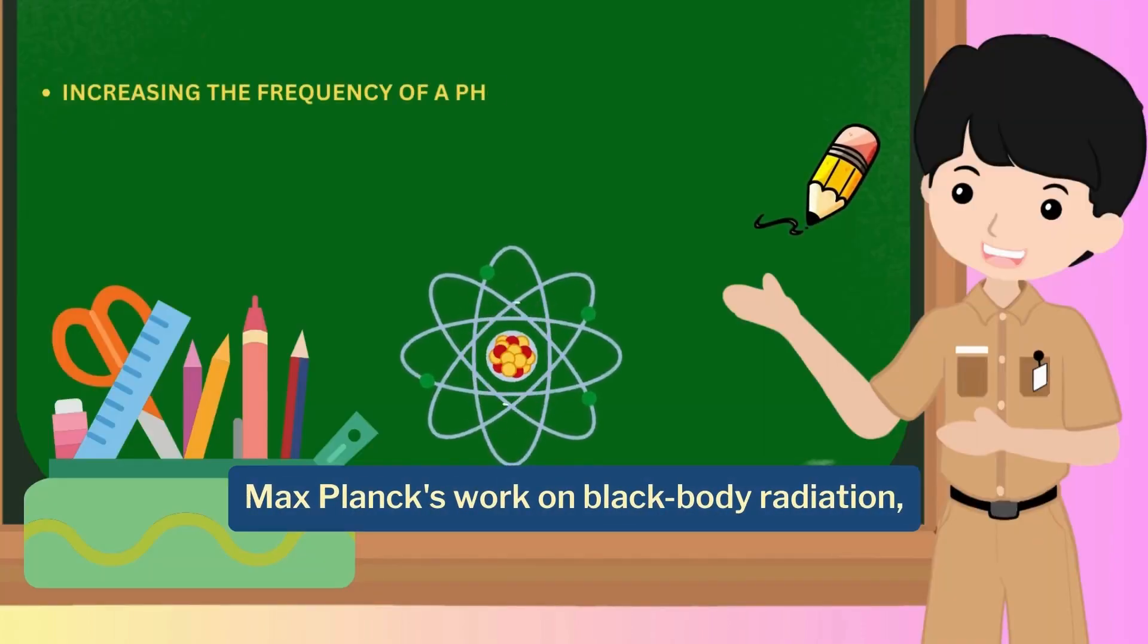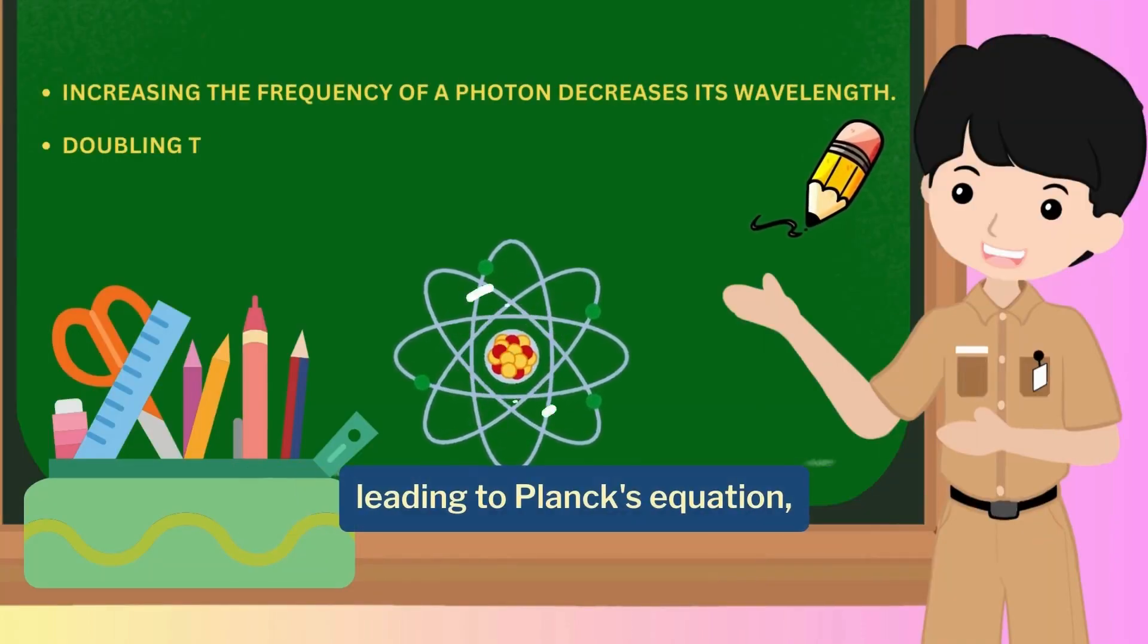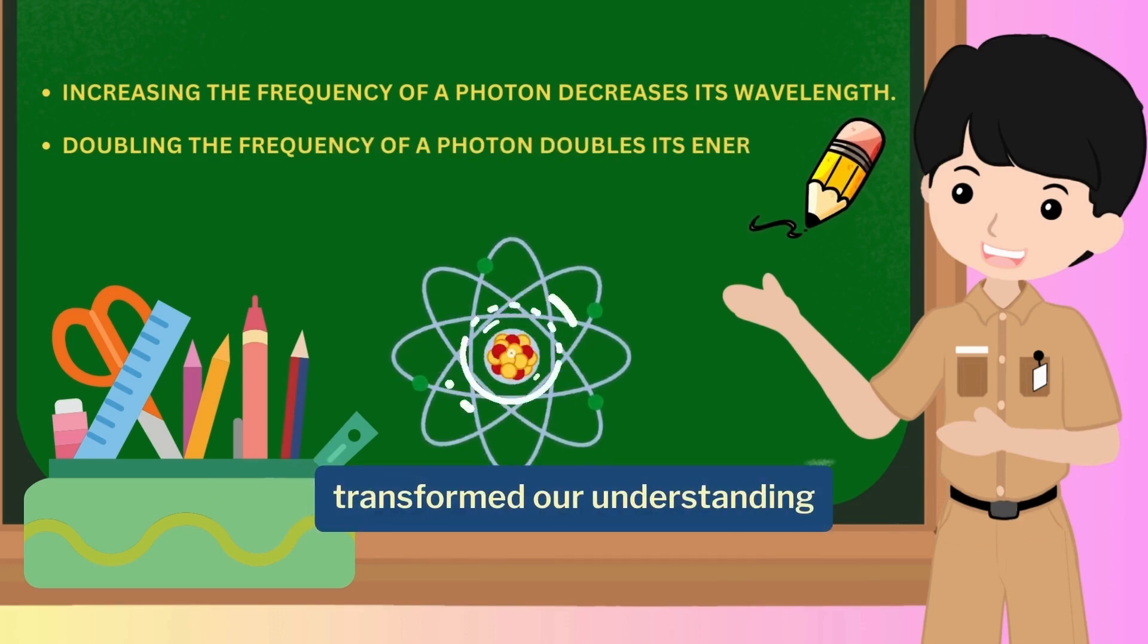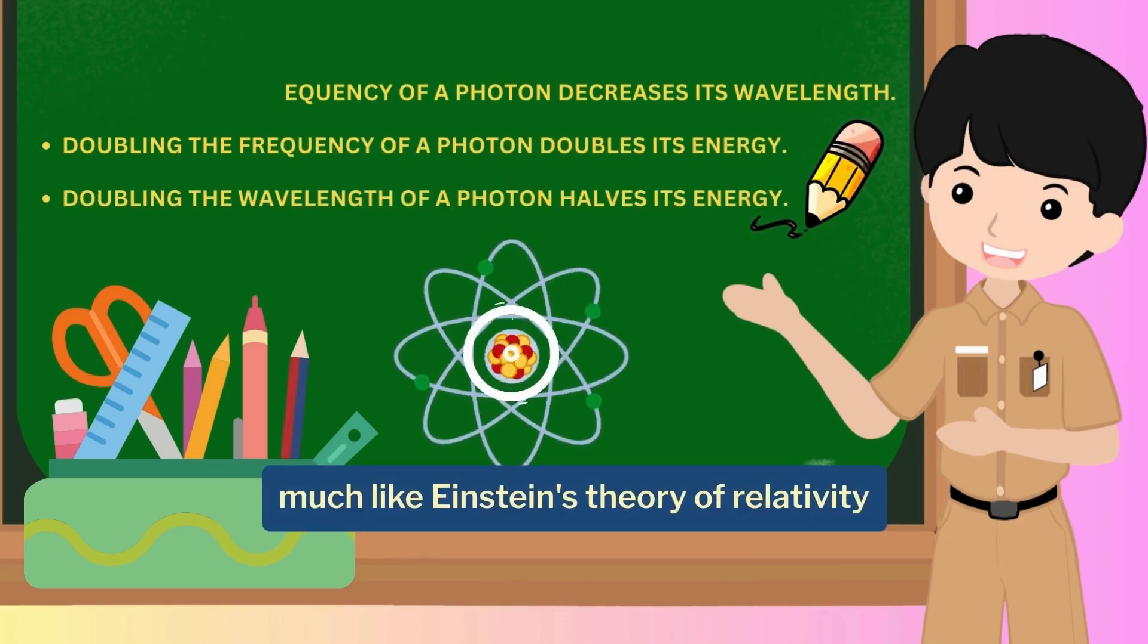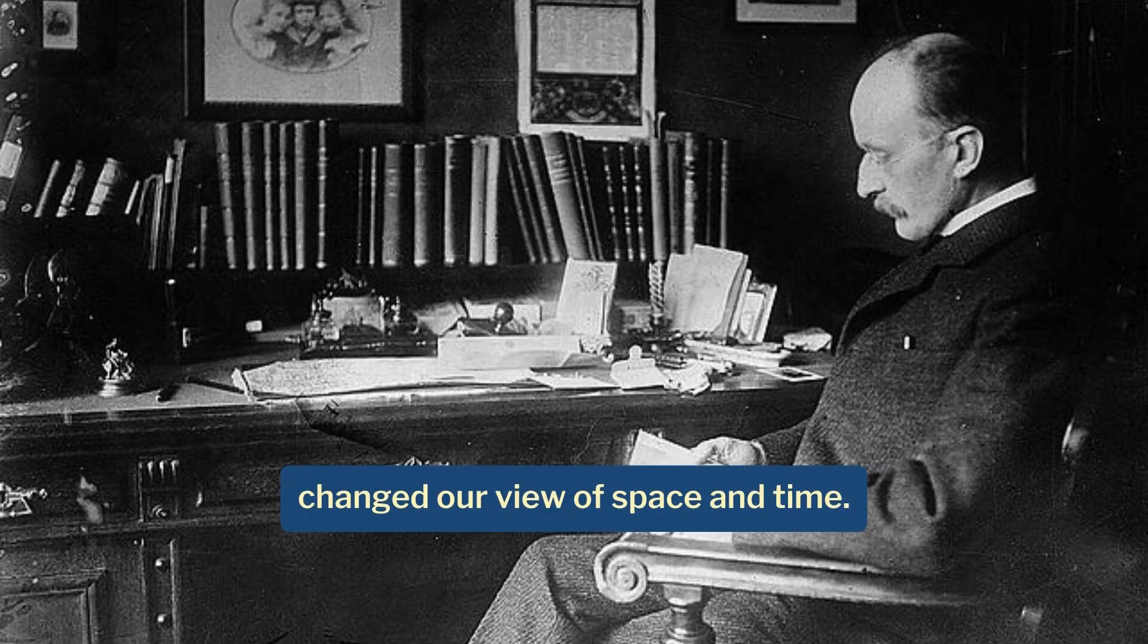Max Planck's work on black body radiation, leading to Planck's equation, transformed our understanding of atomic and subatomic processes, much like Einstein's theory of relativity changed our view of space and time.